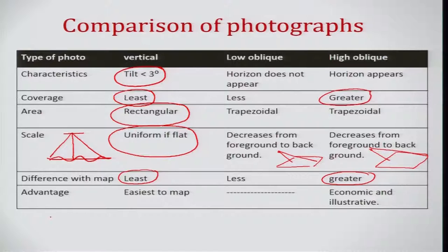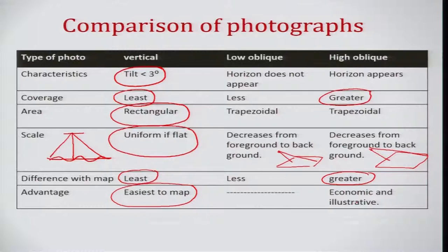The advantage of vertical photographs is that most information can be marked accurately, making them easiest to map. Low oblique is not very easy to map. High oblique is good in terms of economy and illustration because you can cover greater areas, though coverage is comparatively less for vertical photographs.